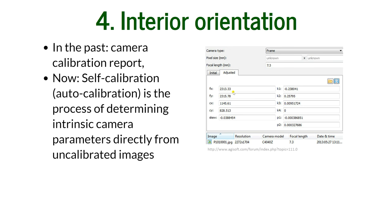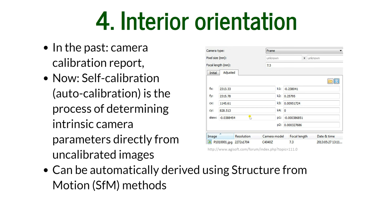Here is a screenshot from Agisoft showing the interior parameters of the camera — what the lens distortions are, what is inside the camera, its distortions — in contrast to the exterior orientation, which is the position of the camera in space. The interior orientation describes how the camera behaves internally, and as mentioned, it can be automatically derived using structure from motion methods.